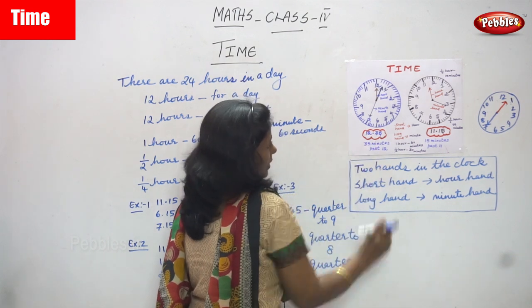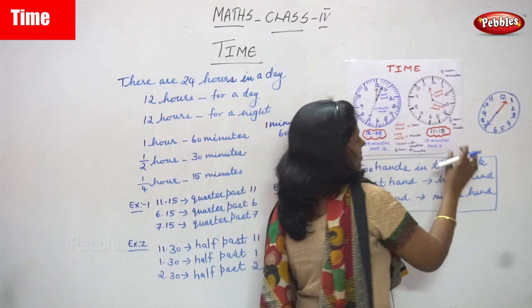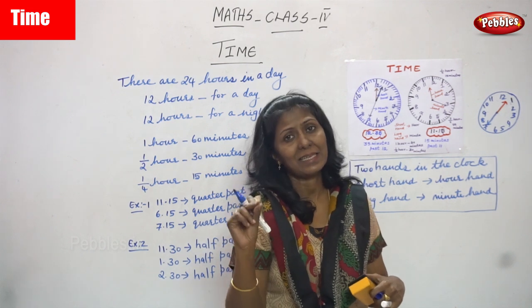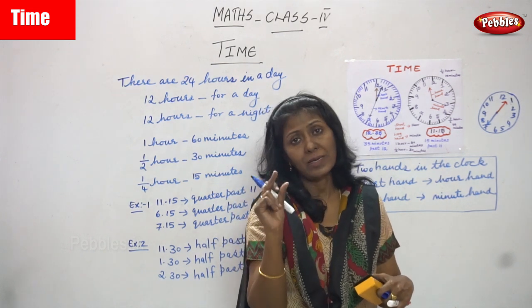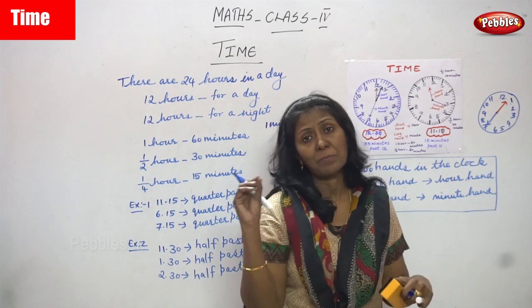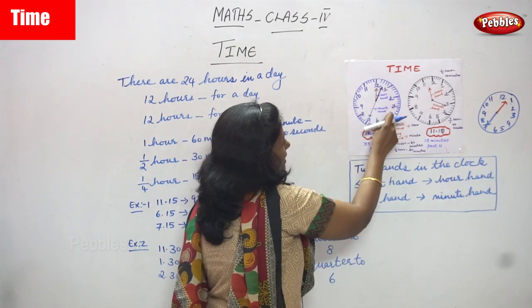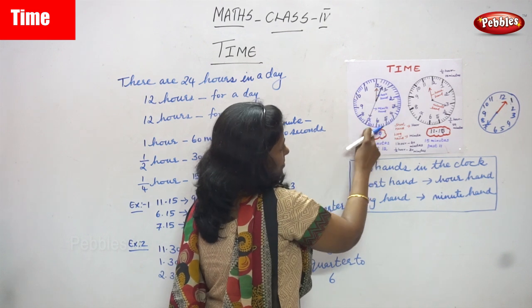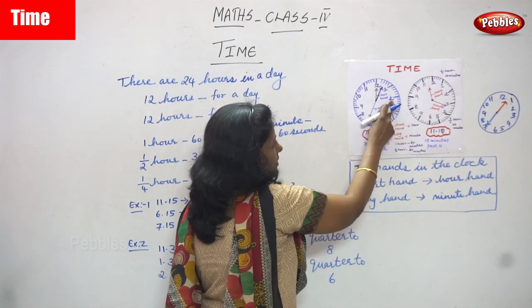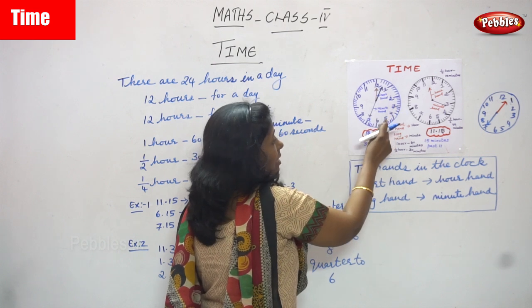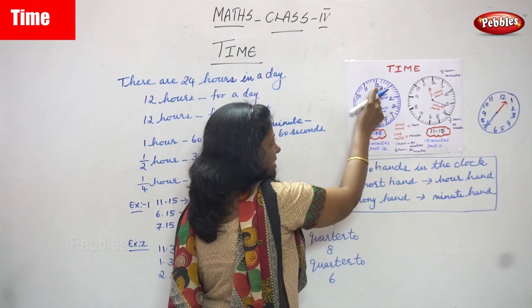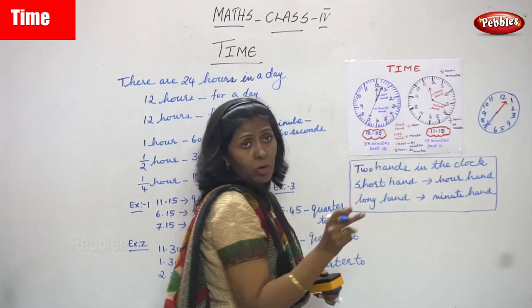So the red hand, the short hand, denotes only the hour — it comes between 12 to 1, and that is 12:35, which we can call 35 minutes past 12. There are two hands in the clock: one is a short hand and another is a long hand. Short hand is red in color and long hand is blue in color. Short hand represents the hour and long hand represents the minute. Each and every number represents 5 minutes. So 1 represents 5, 2 represents 10, 3 represents 15, 4 represents 20, 5 represents 25.